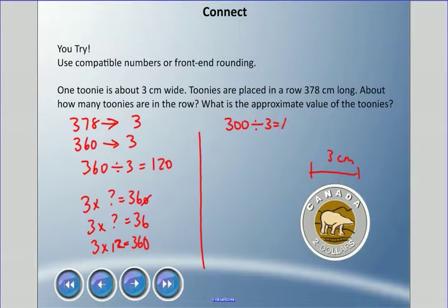Now if we look at front-end rounding, however, we're looking at 300, we're going to change that to 300, and that would be about 100 in each row. Now let's talk about the approximate value. 120 times 2 - we're doing times 2 because it's two dollars - 12 times 2 is 24, and I add the zero, so it's about $240 from this compatible numbers way. But if I do front-end rounding, I'm just multiplying 100 by 2, and that equals $200.